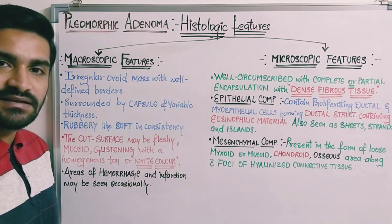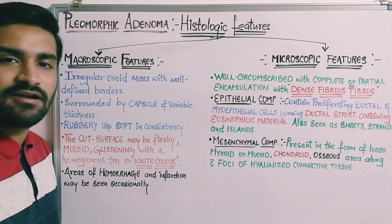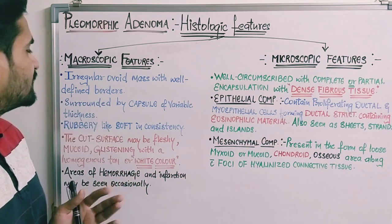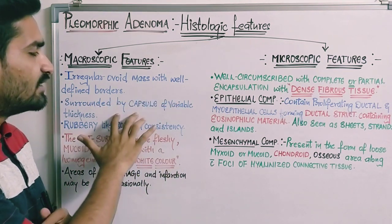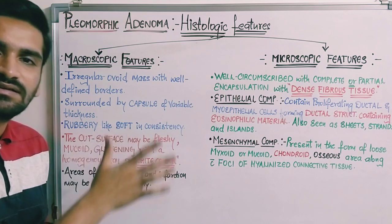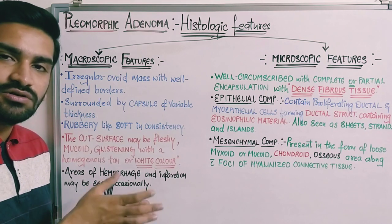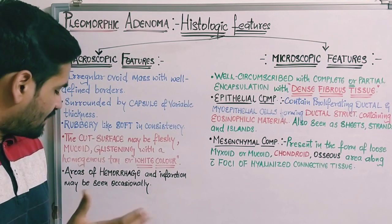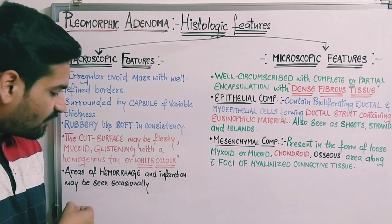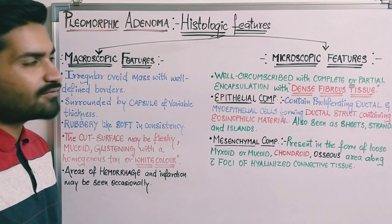The cut surface will be fleshy, mucoid, and glistening — shiny — with a homogeneous tan or white color. Lastly, areas of hemorrhage and infarction may also be seen in some cases. That covers the macroscopic features: irregular ovoid mass, capsule of variable thickness, rubbery and soft consistency, fleshy mucoid glistening cut surface, homogeneous tan or white color, and possible areas of hemorrhage and infarction.